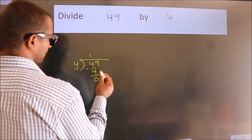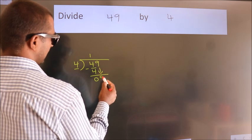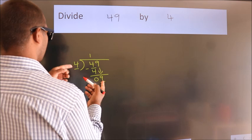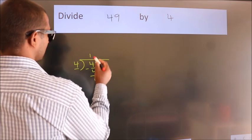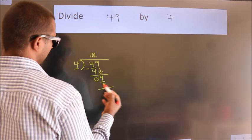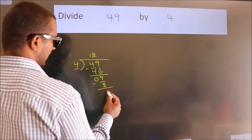After this, bring down the beside number, so 9 down. A number close to 9 in 4 table is 4 times 2, which is 8. Now we subtract, we get 1.